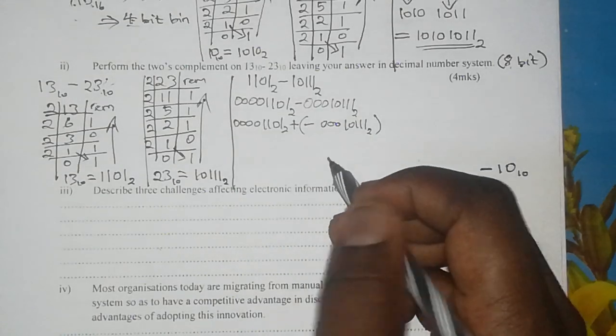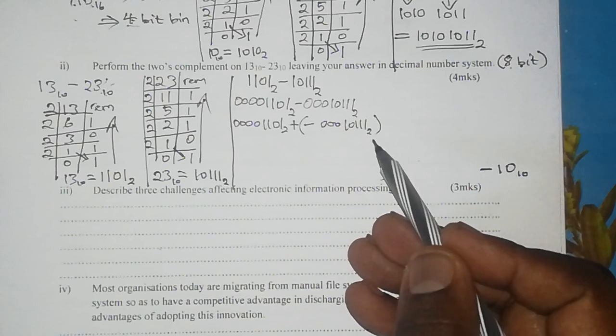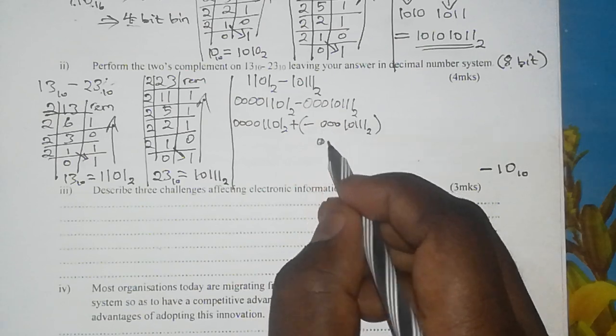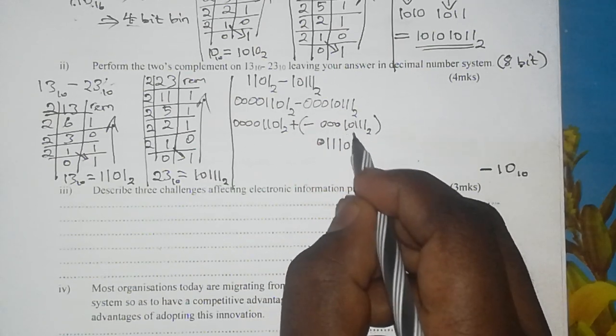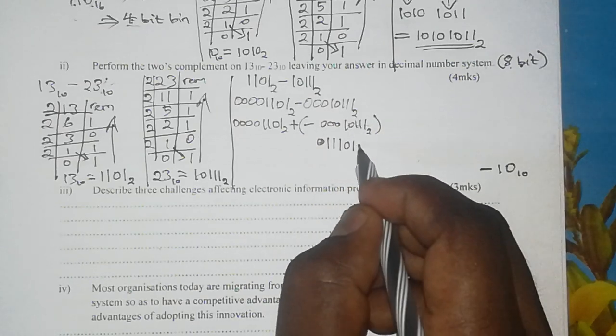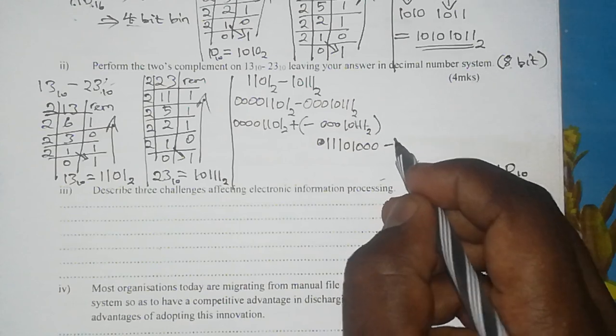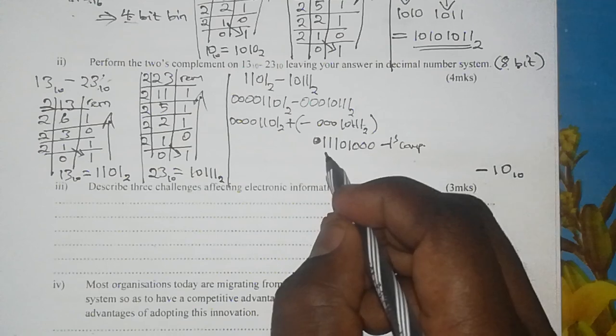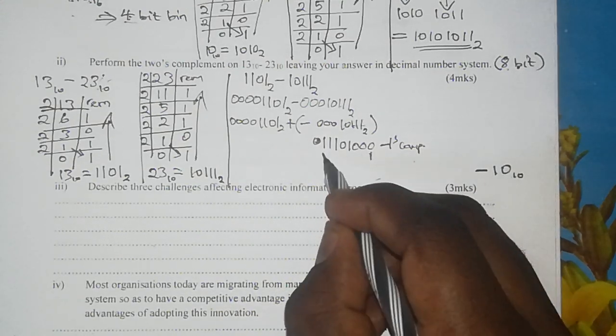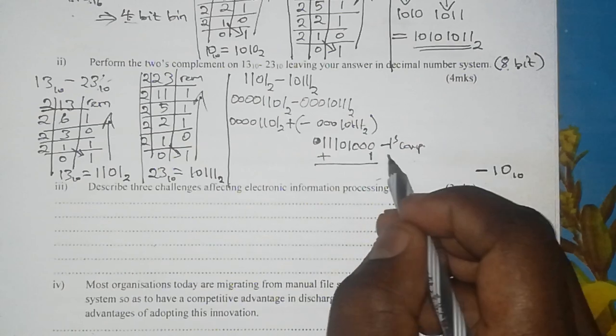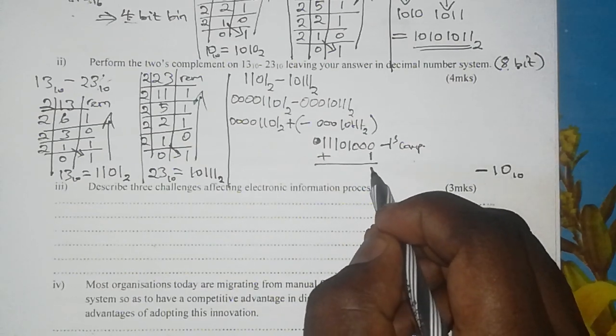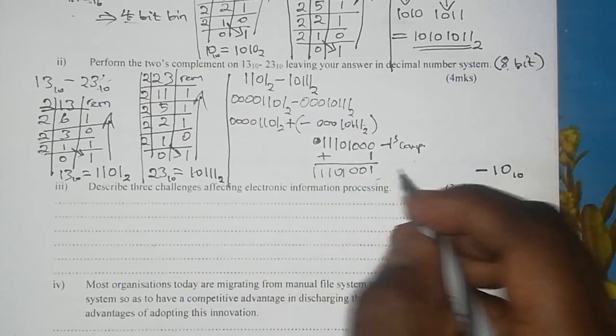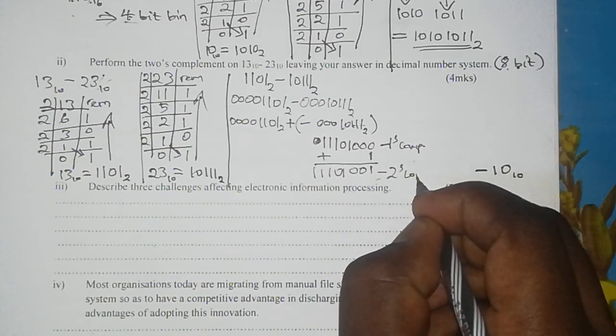So to get the 1's complement you change the 0's to 1's and the 1's to 0's. Therefore 0 becomes 1, 0 to 1, 0 to 1, and the three 1's to three 0's, giving us 11101000. So this is the 1's complement of that number. And then to get the 2's complement we add 1 at the rightmost position. And so we get 11101001, and this is now our 2's complement.